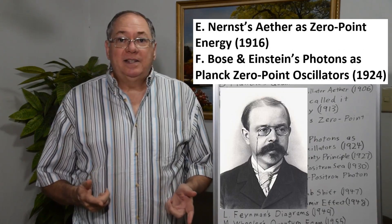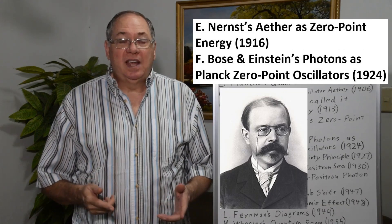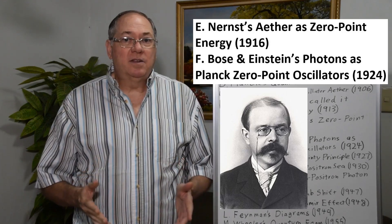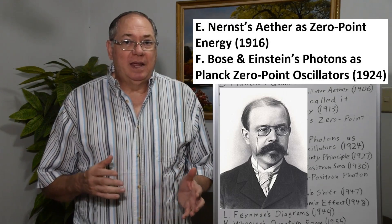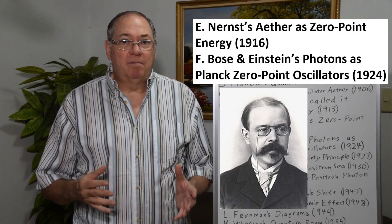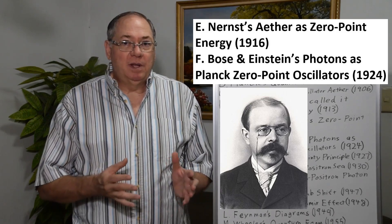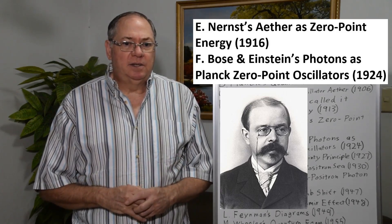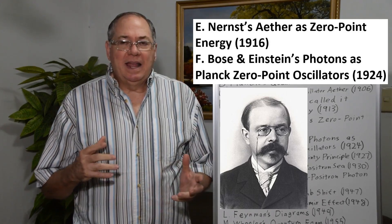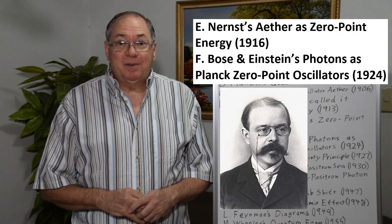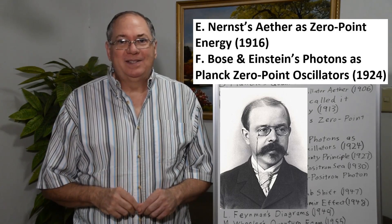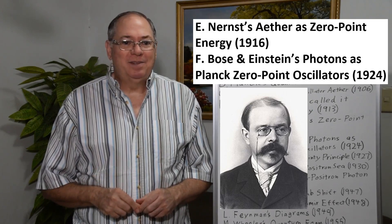By 1916, Walter Nernst actually wrote the first really good technical paper that came up with an ether — a quantum ether of the Planck type — made with Planck's resonators. He was the 1920 Nobel Prize winner for the third law of thermodynamics, and he won the Nobel Prize in chemistry for that.